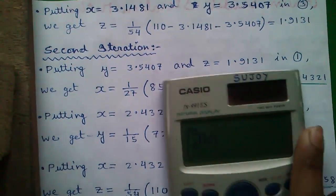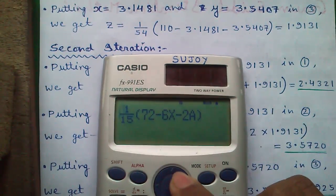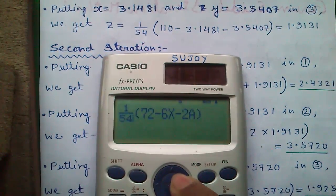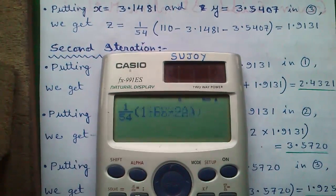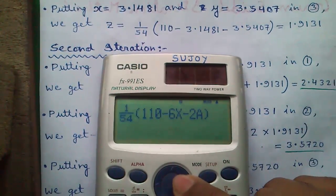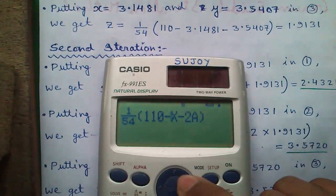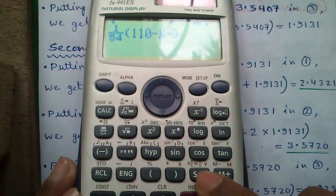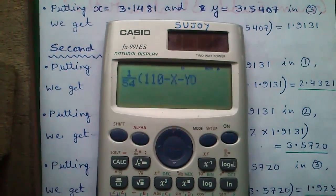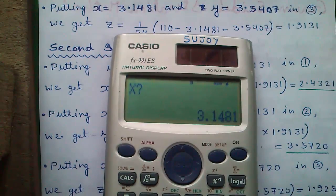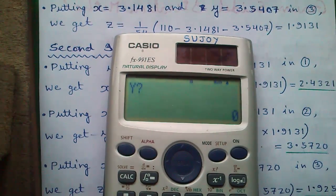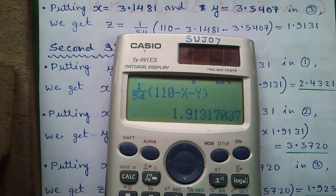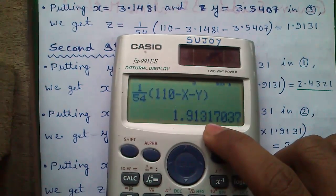Similarly for z press joystick up, 1 by 54 into 110 minus x minus y. For y press alpha and s to d button, and press calc button. x is now 3.1481, press equals and z is 0. So you will get z equals 1.9131.